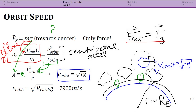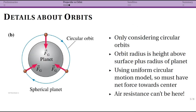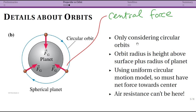Let's think about the details. We are only considering circular orbits here because of our central force model, which requires r to be constant. For those who've had some astronomy — many orbits are actually ellipses; many things in space do not orbit in circles. The math we just used only applies to circles. This is a very limited model because we are using the central force model, which only applies for fixed values of r.